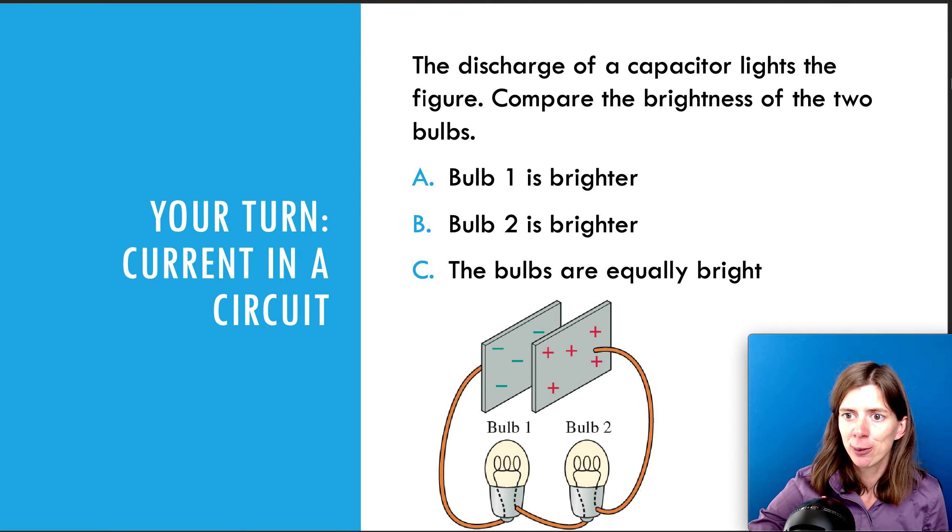Let's look at one final question for this section. It says, the discharge of a capacitor lights the figure. Compare the brightness of the two bulbs. So, think about it for a second. And let's take a look. So, first of all, we have a capacitor. So, we have two plates. So, which way is the current going?